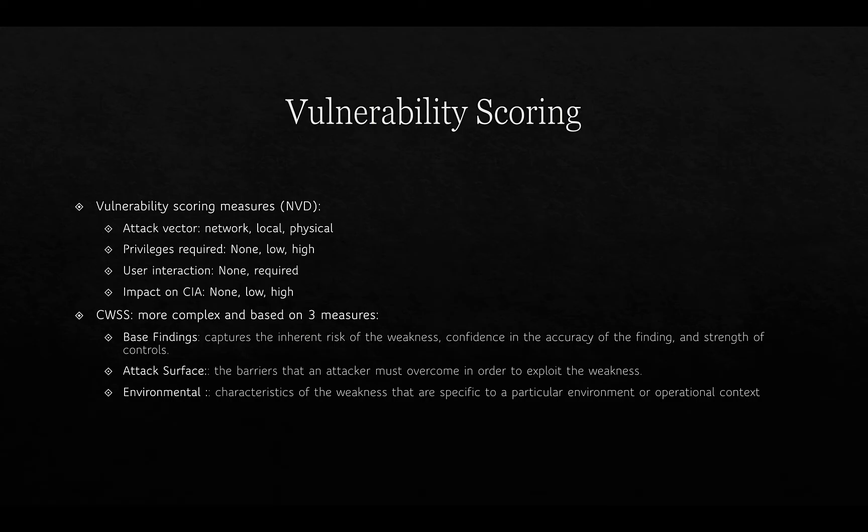Vulnerabilities are scored, and there are a couple of ways of doing that. The NVD has a vulnerability scoring measure that looks at various attributes: the attack vector — whether it needs to be local, physical, or can be done over a network; whether privileges are required; whether user interaction is required; and finally, the impact on confidentiality, integrity, and availability, rated as none, low, or high. CWSS is more complex and based on three measures.